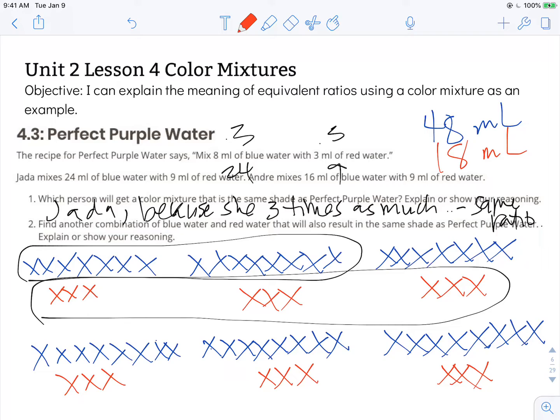If we make six batches, we're going to have to use six times as much of one part and six times as much of the other part in order to create the same shade of color, which is showing how these equivalent ratios work with these kinds of recipes. Thanks for watching.